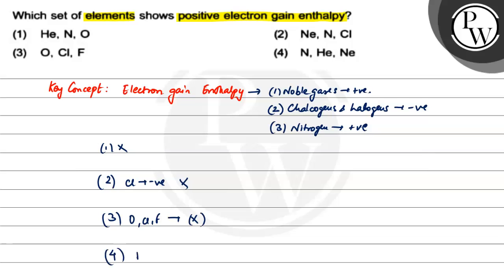Option 4 is nitrogen, helium and neon. All of these have positive electron gain enthalpy as mentioned. Therefore, this is the correct option. Thank you very much. All the best.